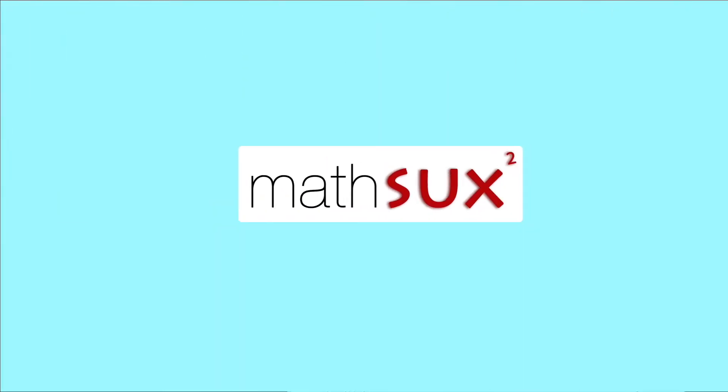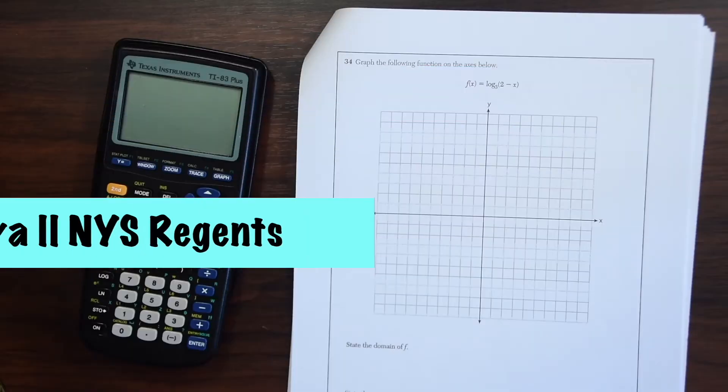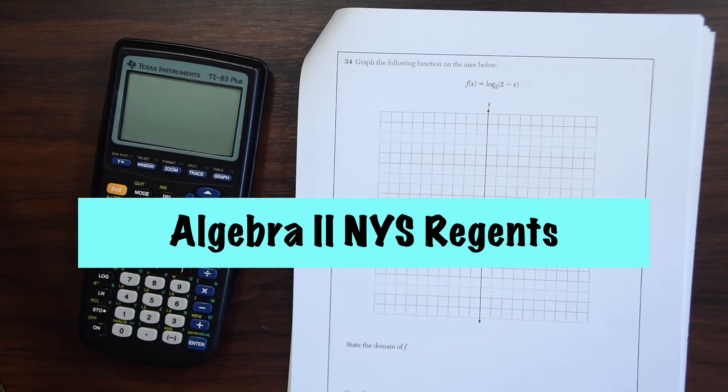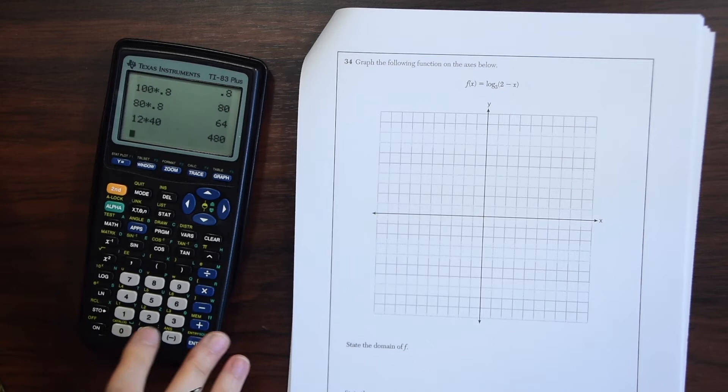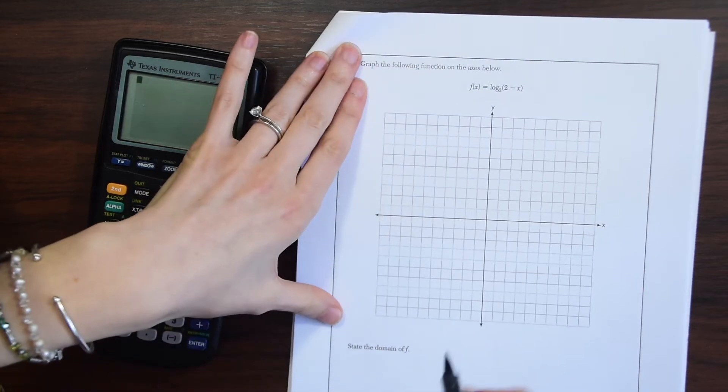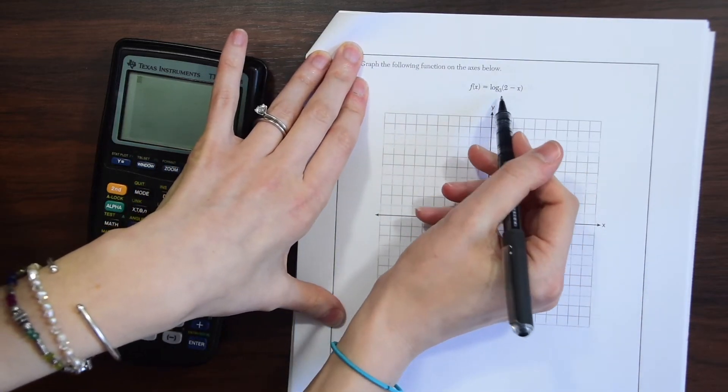Hi everyone and welcome to MathSucks. This video is going to help you pass the Algebra II Common Core Regents. Here is question 34. Graph the following function on the axis below: f(x) = log base 3 of (2 - x). I want to plug this into my calculator, so to do that we need to use the change of base formula.